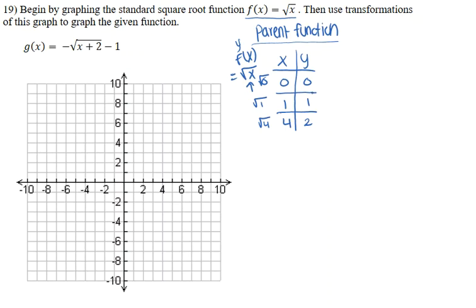Now that we have our parent function x and y values, let's graph that. We know it starts at (0, 0), goes to (1, 1), and goes to the point (4, 2). And just for fun, if we put 9 here we get the value 3 here — so the point (9, 3) — just for accuracy. That's our parent function.